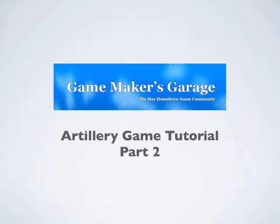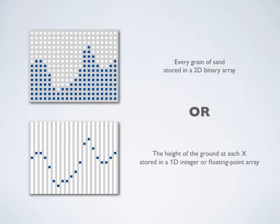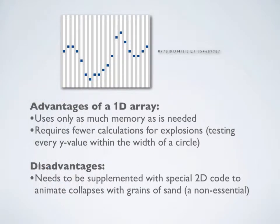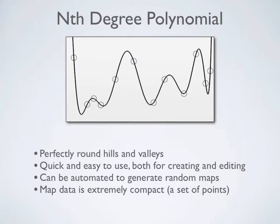In the previous video, we made observations about the terrain in Scorched Earth. Specifically, we noticed that the terrain is made of heavy sand, so there is never any empty space underneath the surface. We deliberated about how to best store that data in memory, and we decided that it was best to use a one-dimensional array. We recognized that this data can be generated with a function, and we considered several candidate functions until we settled on a polynomial.